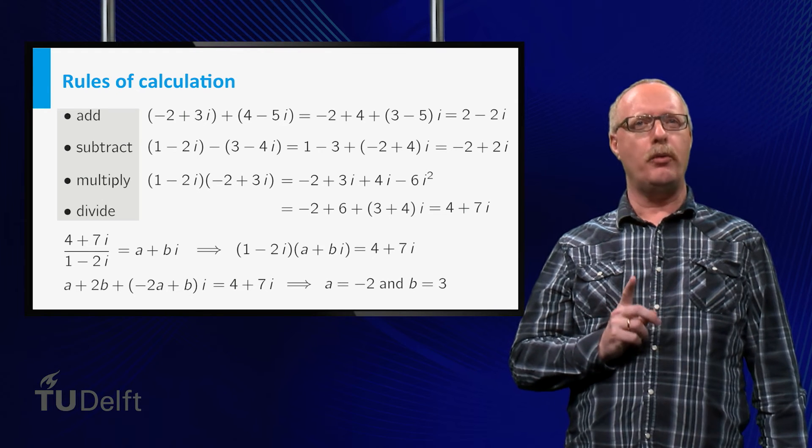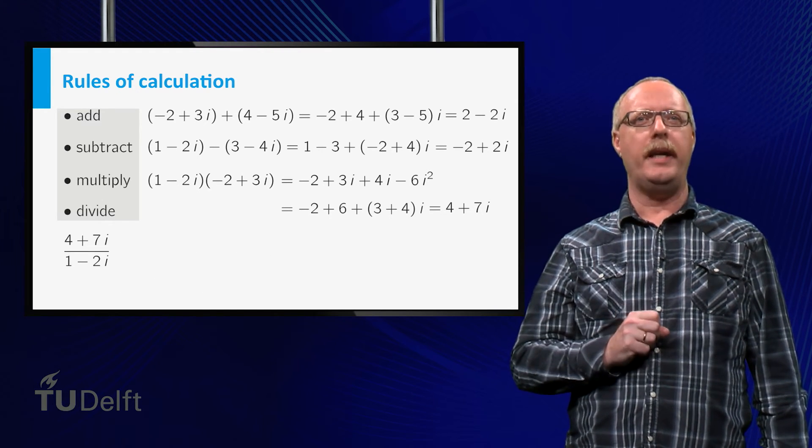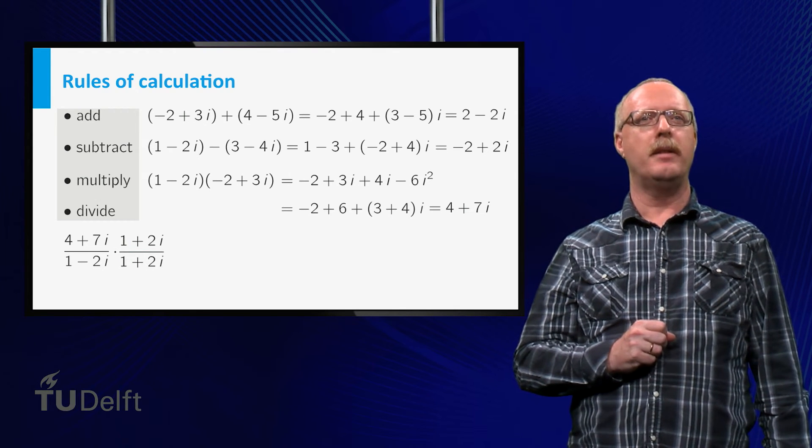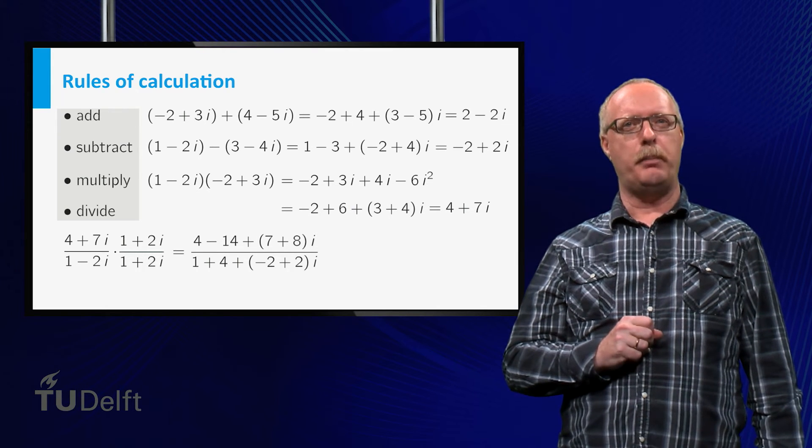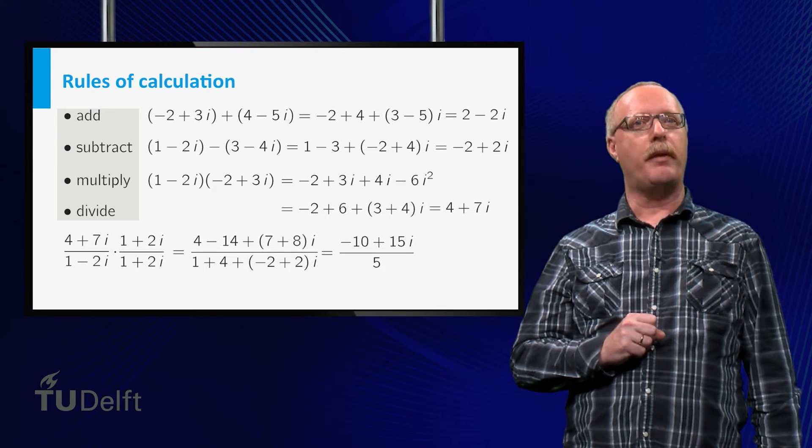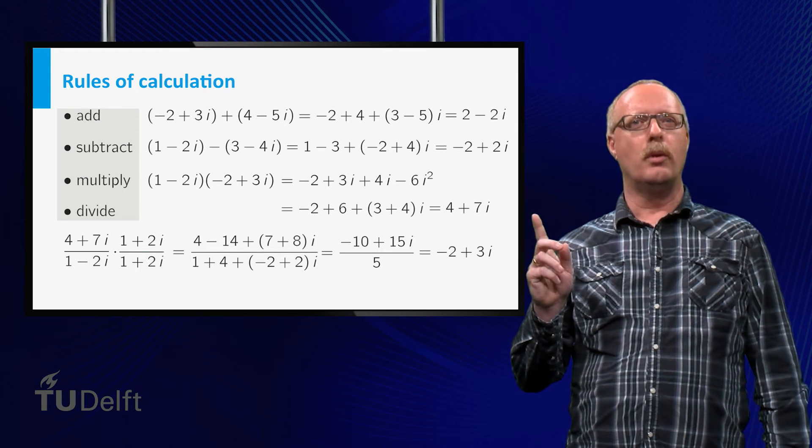If we multiply both the numerator and the denominator by 1 plus 2i, and expand both the numerator and the denominator, we see that the denominator gets real, and after simplifying the numerator, we only have to divide by the real number 5, and we end up with the answer minus 2 plus 3i.